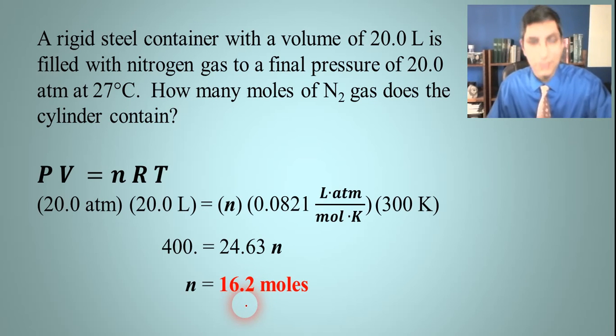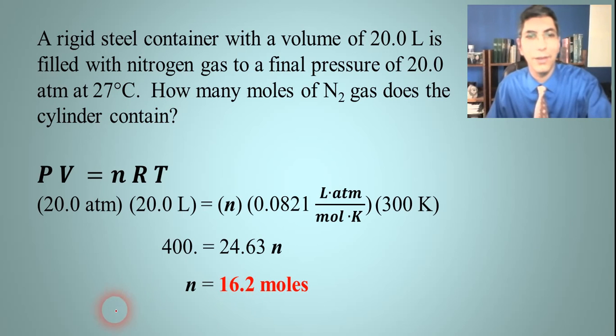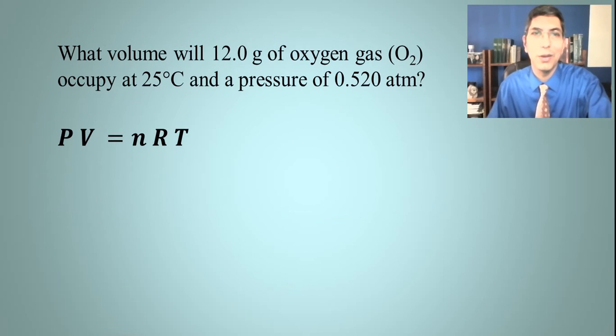That's our answer for this problem. As you can see, it's pretty simple - just plug and chug into the ideal gas law. Can we ever have ideal gas law problems that are a little bit harder? I'm sure we can. Sometimes we have to do some conversion. Let's take a look at this example: what volume will 12.0 grams of oxygen gas occupy at 25 degrees Celsius and a pressure of 0.520 atmospheres?